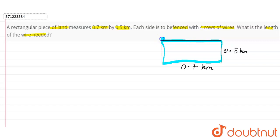So firstly we have to calculate the perimeter of the rectangular piece of land one time and then we have to multiply it by four so that the total length of the wire can be calculated. So firstly, perimeter of rectangle...